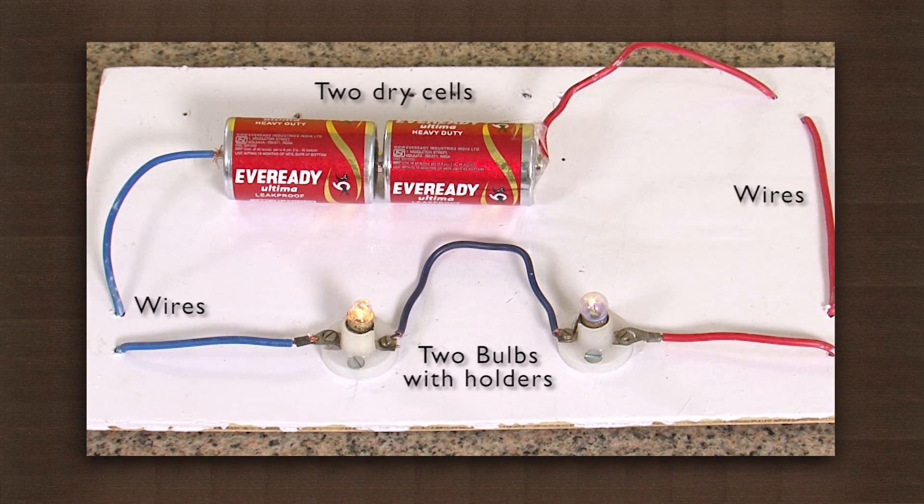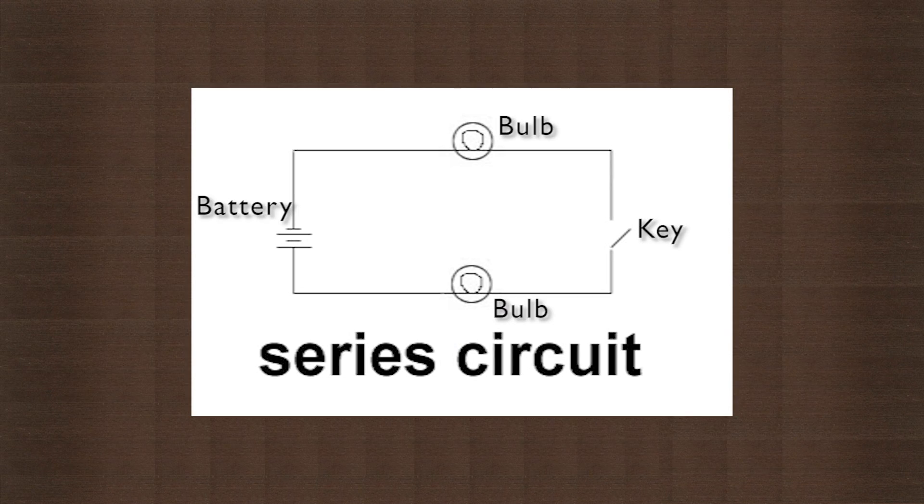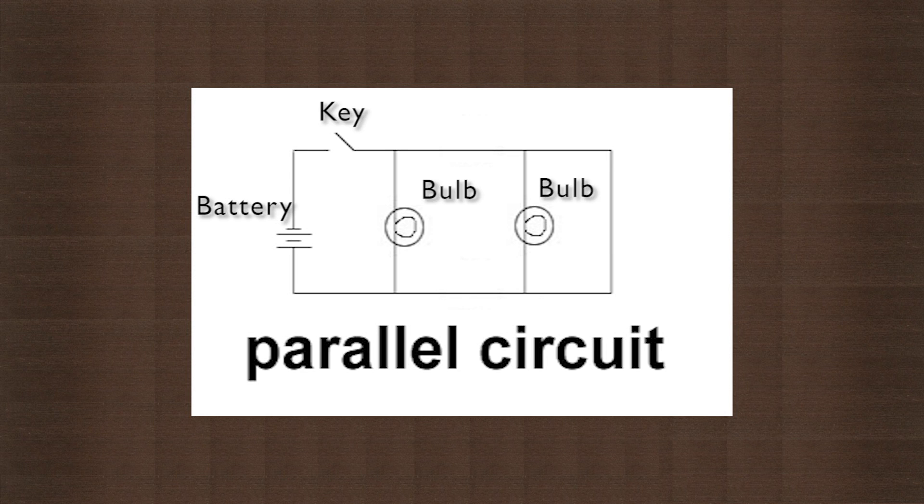We will take two bulbs fitted to a holder, wires, two dry cells. This is how a series circuit looks like. And this is how a parallel circuit looks.